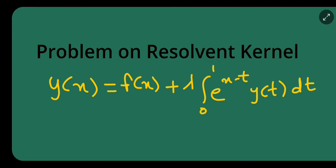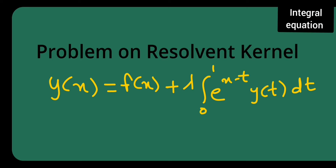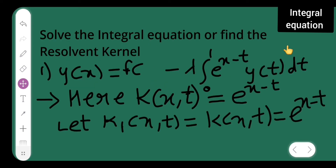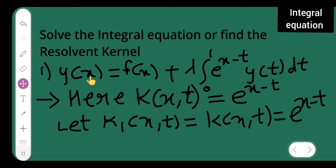In today's lecture, I will be doing a problem on resolvent kernel. The equation is y(x) = f(x) + λ∫₀¹ e^(x−t) y(t) dt. Take this as equation 1.